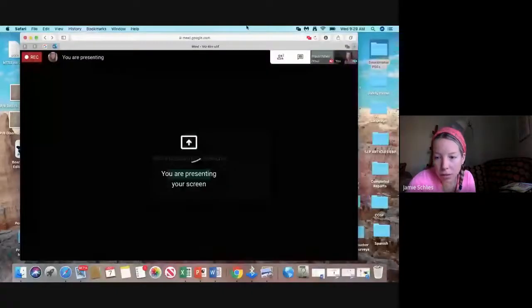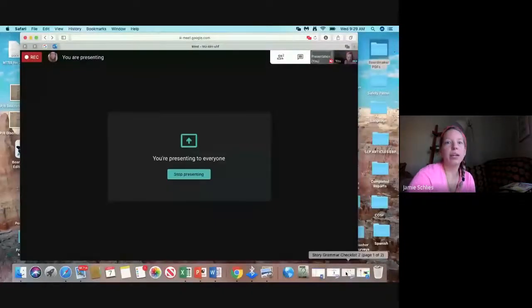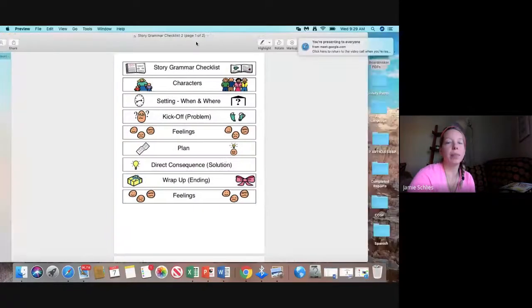We have already made our predictions about the book and now we are going to see if we can pick out all the story grammar elements when reading the book. So before I start to read, I'm going to review our story grammar elements. Okay, we have eight. I'm going to start presenting so that way you can see. Alright, and here are our story grammar elements.